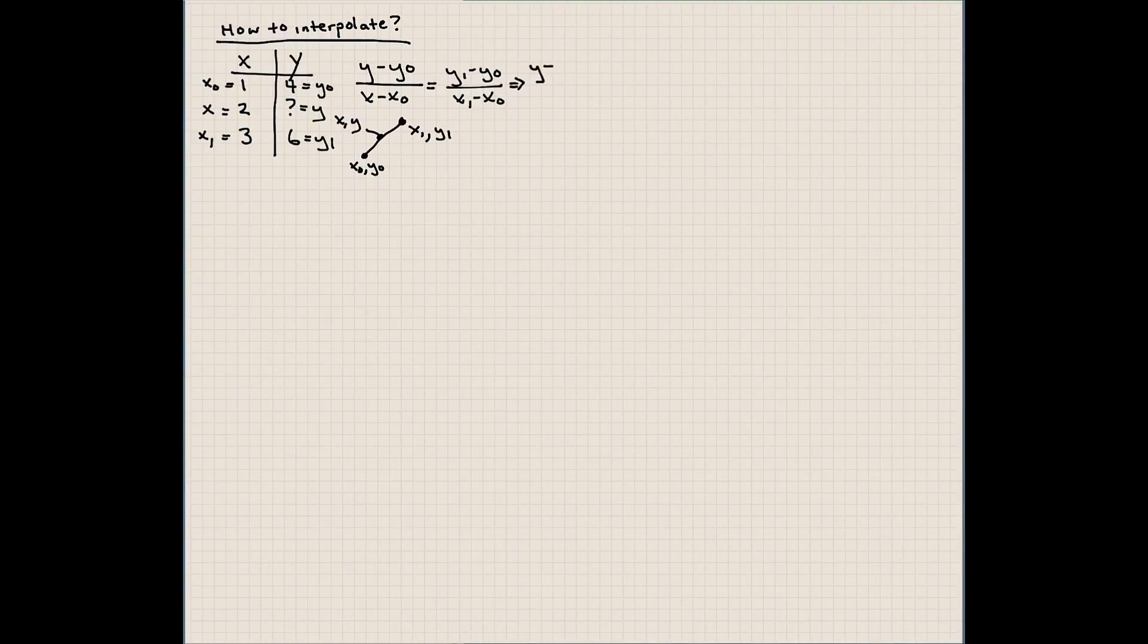This is y₀, this is y₁, this is y - we don't know what y is. So using this same logic, let's plug the values into this equation. y in this case we don't know; y₀ in this case is 4; x we also know is 2; x₀ is 1.